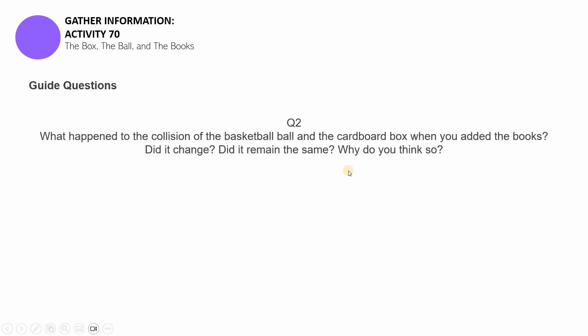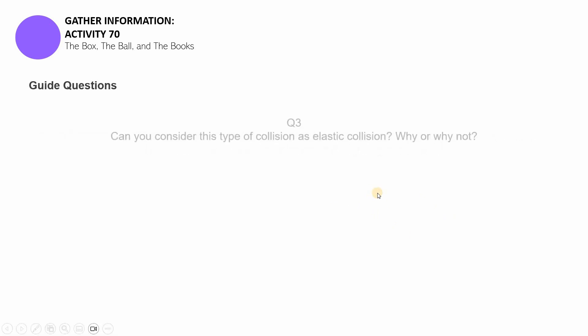If you need more time, pause this video. Now, if you're through, let's proceed to question number two. What happened to the collision of the basketball ball and the cardboard box when you added the books? Nalagay na yung books, ano nangyari dun sa collision nila? May nagbago ba? Or did it actually remain the same? Now, kung may nagbago, what do you think is the reason for that? Now, kung parang nag-stay lang, ganun din naman yung collision nung empty pa yung cardboard box, what do you think are the factors that makes it remain the same? Did you actually think differently? And were you surprised about it?